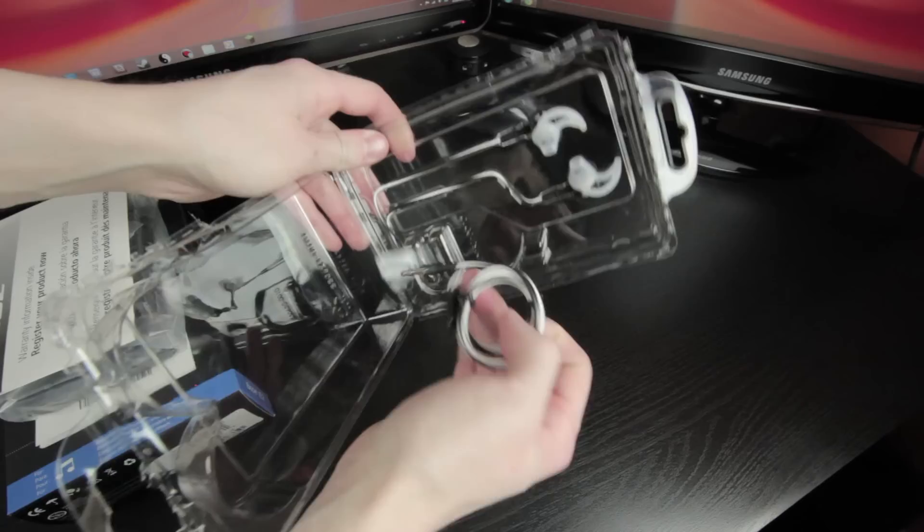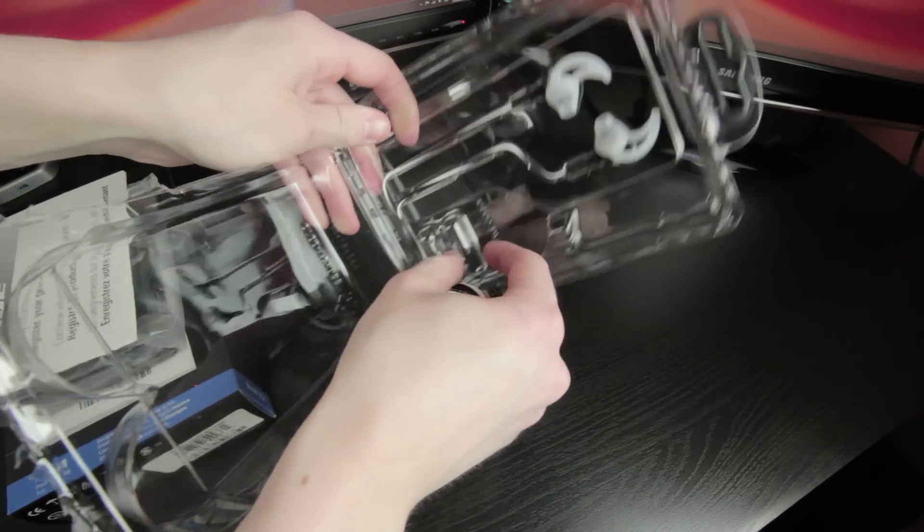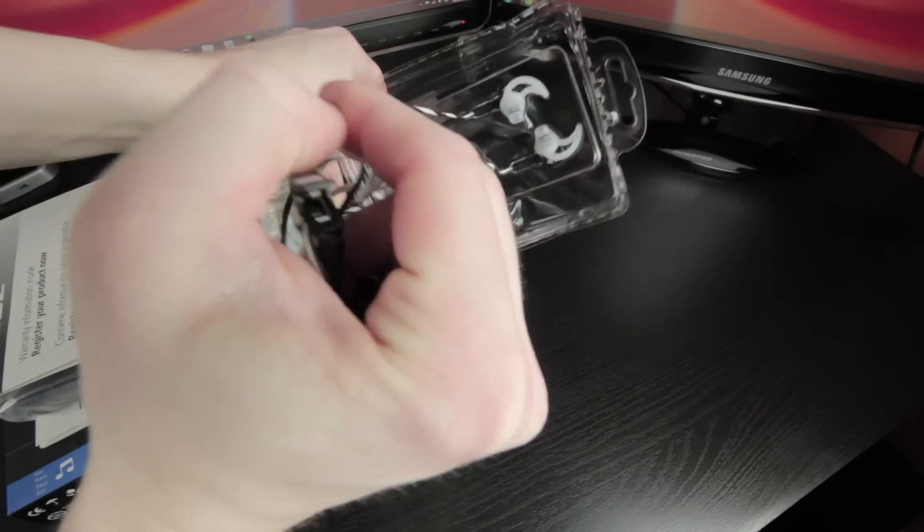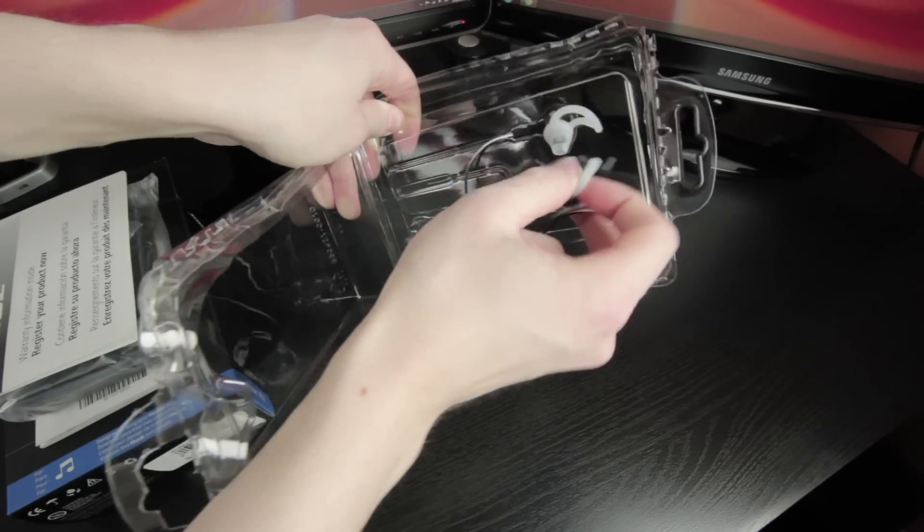Now for the star of the show, the IE2 headphones pre-packaged on the outside of the box just waiting to be pried off. As you can see they have the curved ear tips already installed.